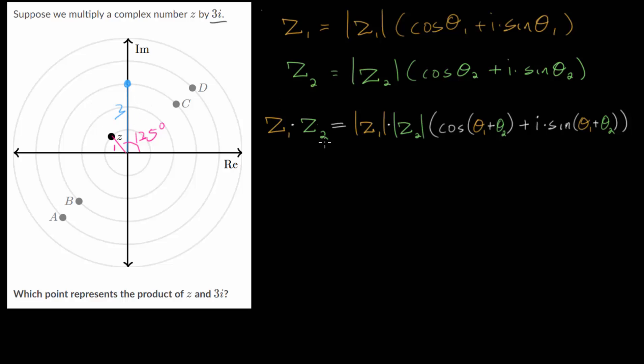3i would be right here. We can draw a line to the origin and count the rings. We can see this has a magnitude of 3 and since it's straight up on this imaginary axis we know that its angle is 90 degrees. So when we multiply these together we will add their angles.